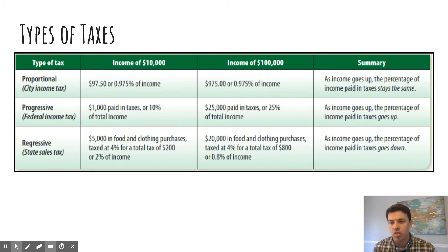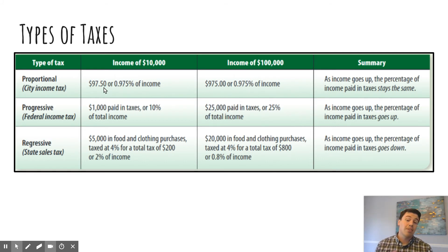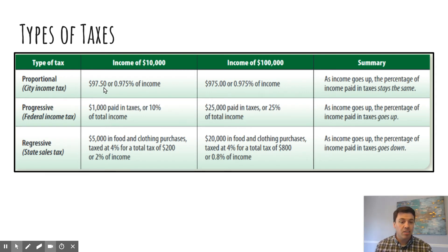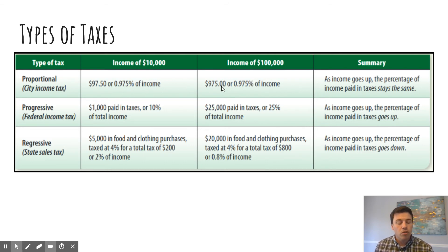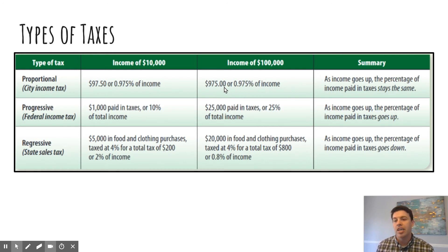Now let's look at the different types of tax systems that exist. We're going to look at the proportional, the progressive, and the regressive. Let's start with proportional — also known as a flat tax, and in some instances a fair tax, though that's subjective. What this means is that the percentage you pay is based on your income and that percentage stays the same. You pay more as you make more money, but at the same rate — you're feeling the same pinch. For example, a person making $10,000 a year and a person making $100,000 both pay at a 9.75% rate. The person making $100,000 pays a higher dollar amount, but overall they're feeling the same impact. That's known as a flat or proportional tax.